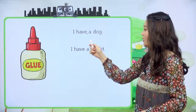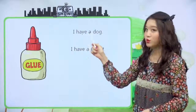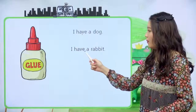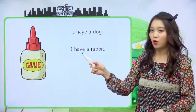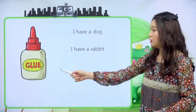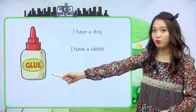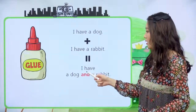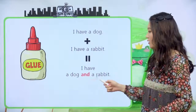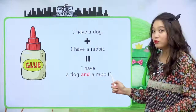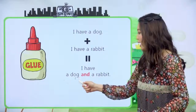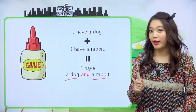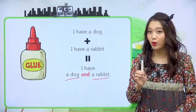I have a dog. 나는 강아지 한 마리를 가지고 있어. I have a rabbit. 나는 토끼 한 마리를 가지고 있어. 이 두 문장을 접착제로 붙여볼게요. 붙이면 어떻게 될까요? I have a dog and a rabbit. 이런 문장이 되었네요. 나는 강아지 한 마리와 토끼 한 마리를 가지고 있어 라는 문장이 돼요.